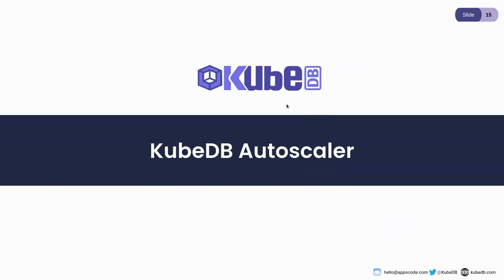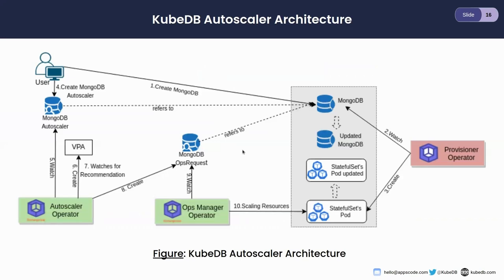Now we'll see how KubeDB auto-scaler solves these problems. The architecture has three operators: the auto-scaler operator, the ops manager operator, and the provisioner operator. The provisioner operator manages the MongoDB database — it creates the StatefulSet, services, secrets, etc. for provisioning the database. The ops manager operator manages maintenance operations such as vertical and horizontal scaling. The auto-scaler operator manages the auto-scaling operations.